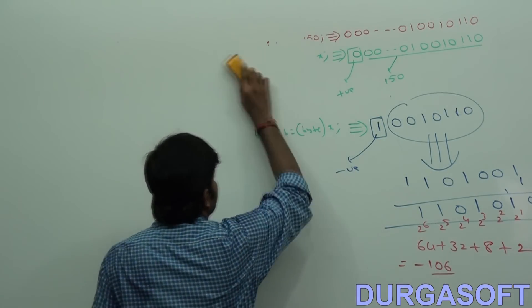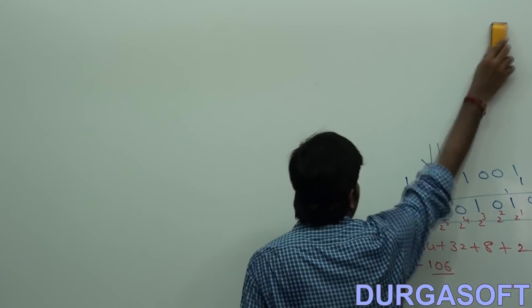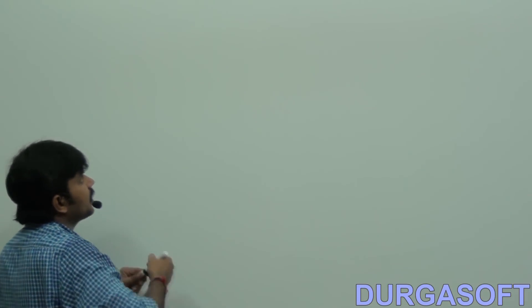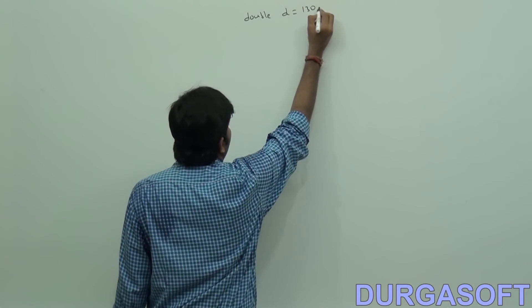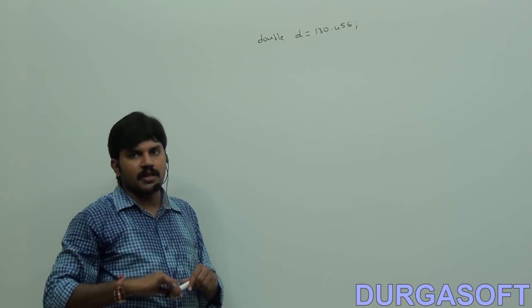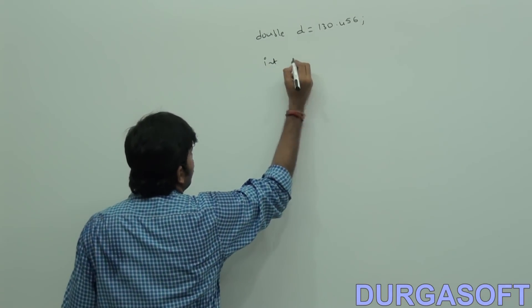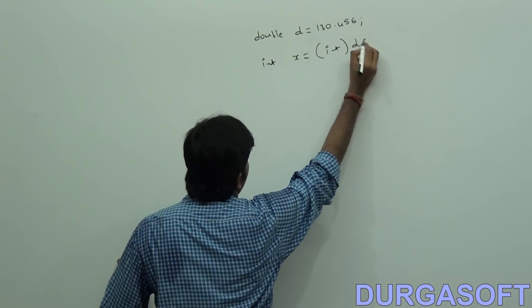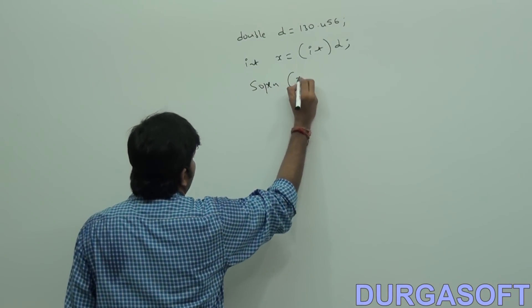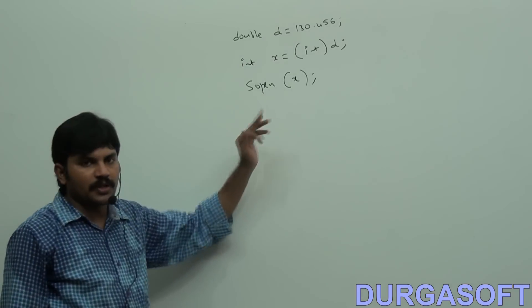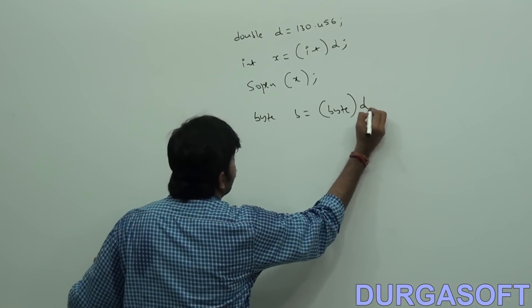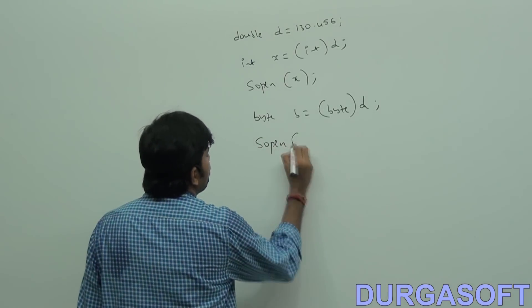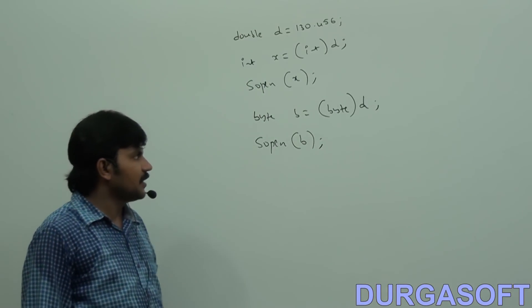Next example — Example 3. From here also you will get some clarity. Here, I am taking double d equal to 130.456. Int x is equal to (int) d, and print x. Byte b is equal to (byte) d, and print b. Take special care here.